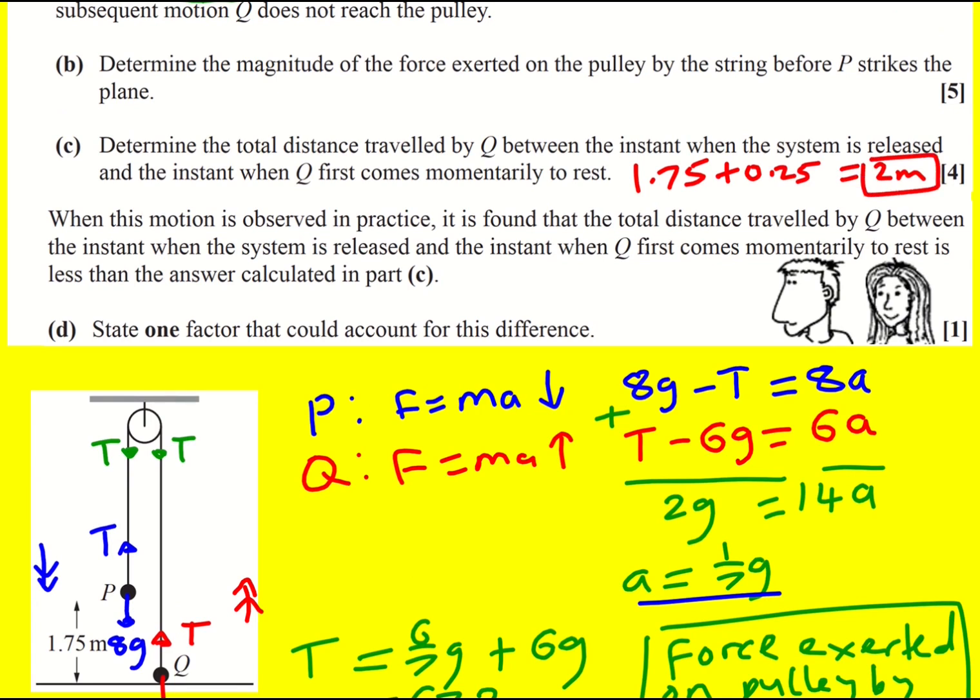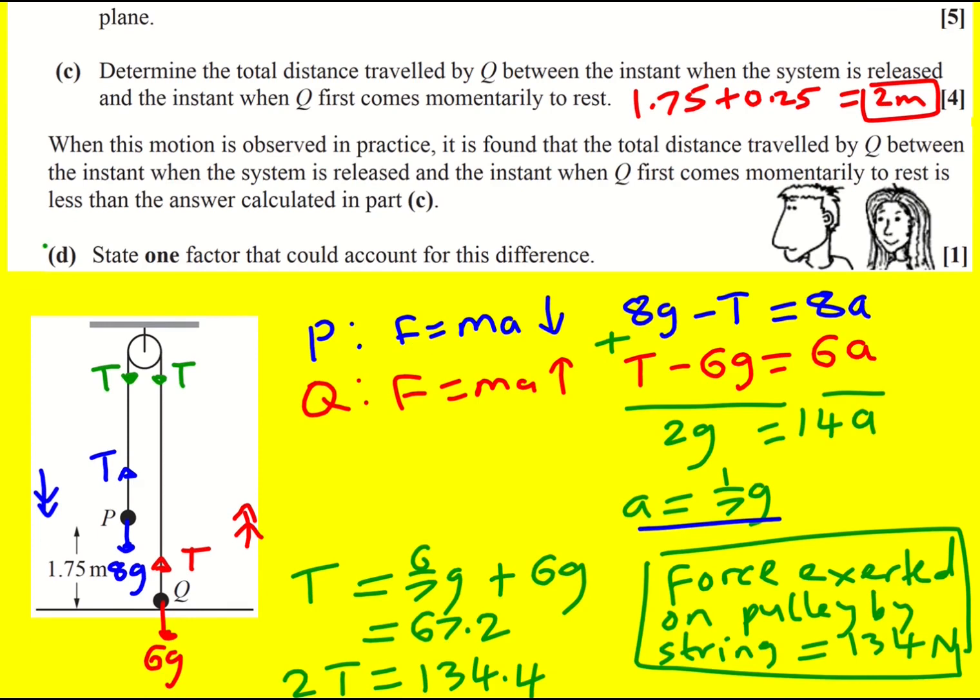All right, I like that question. Very last part is just testing us on our understanding of the model. So if it's actually in practice, then it wouldn't actually go that far. Why would it not go that far? You need to state one factor. Now, I always go with this one, just air resistance. Air resistance would mean that actually the acceleration is not as much. It wouldn't actually go as far. And I think that's all expected. Just to say in the answers, there are alternatives. You could talk about friction in the system on the pulley. You could talk about the string. We assume it's light, but maybe it's not. It's got its own weight. It might stretch, for example. And P and Q are not actually particles. They're going to have dimensions and so on that can play a part as well. But I always just go with air resistance.